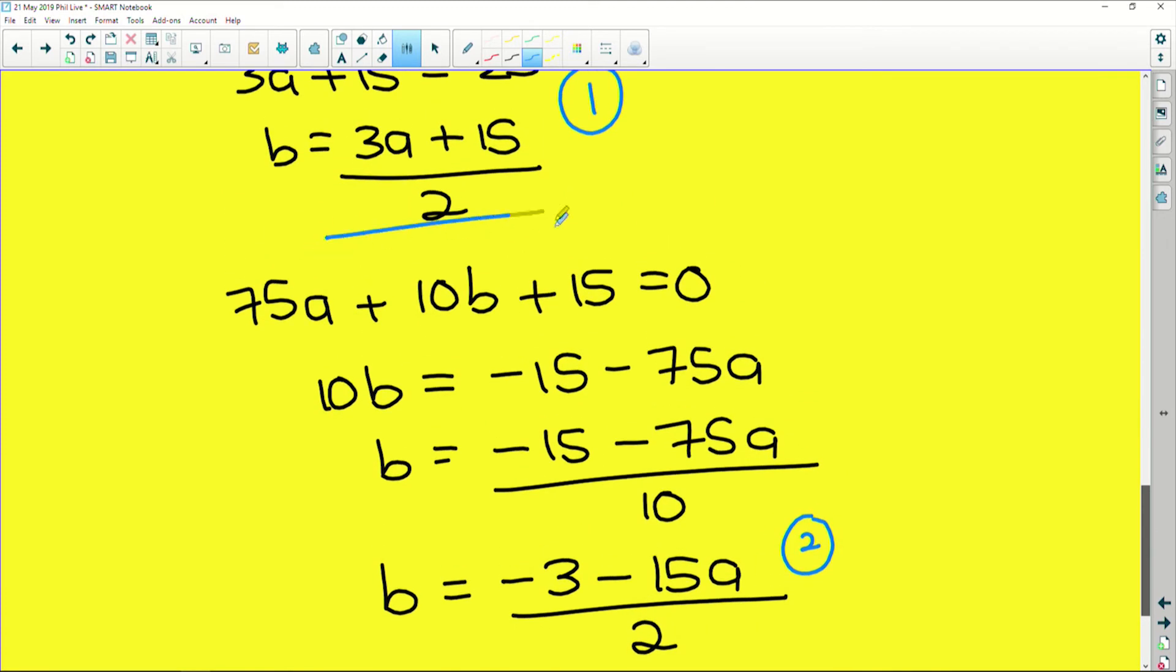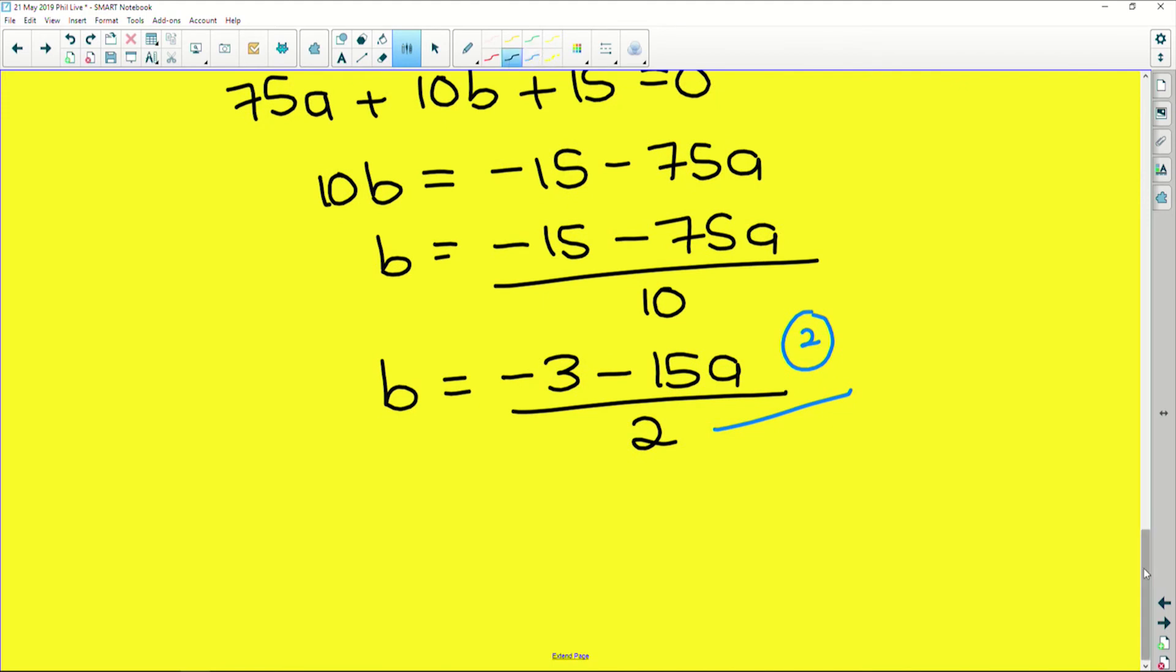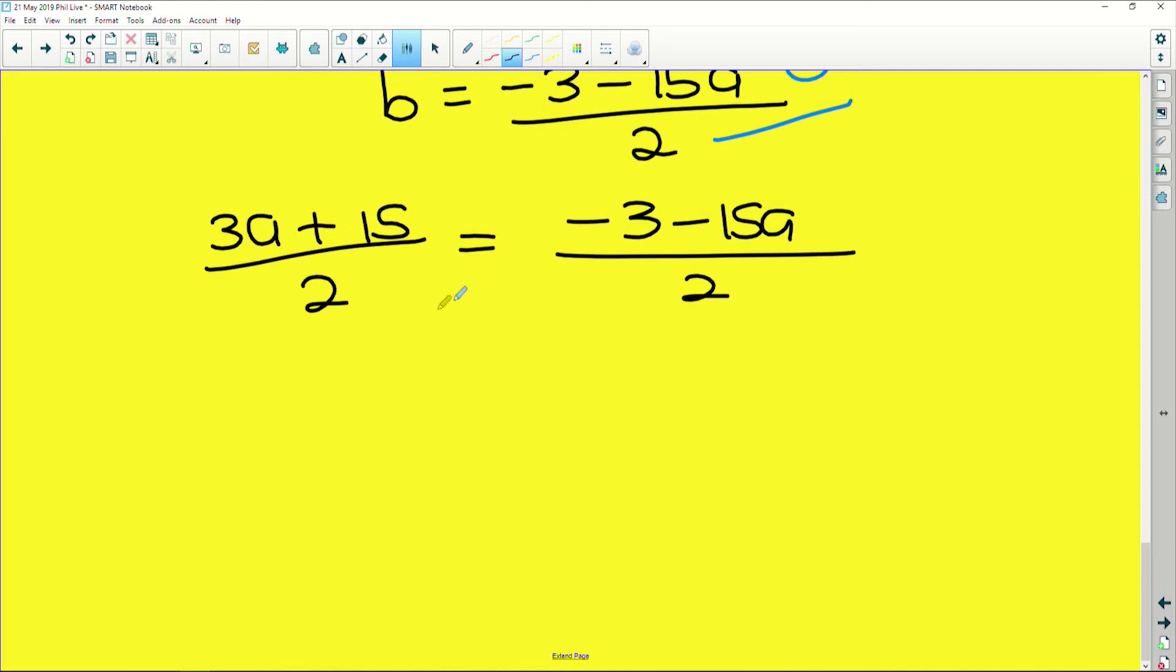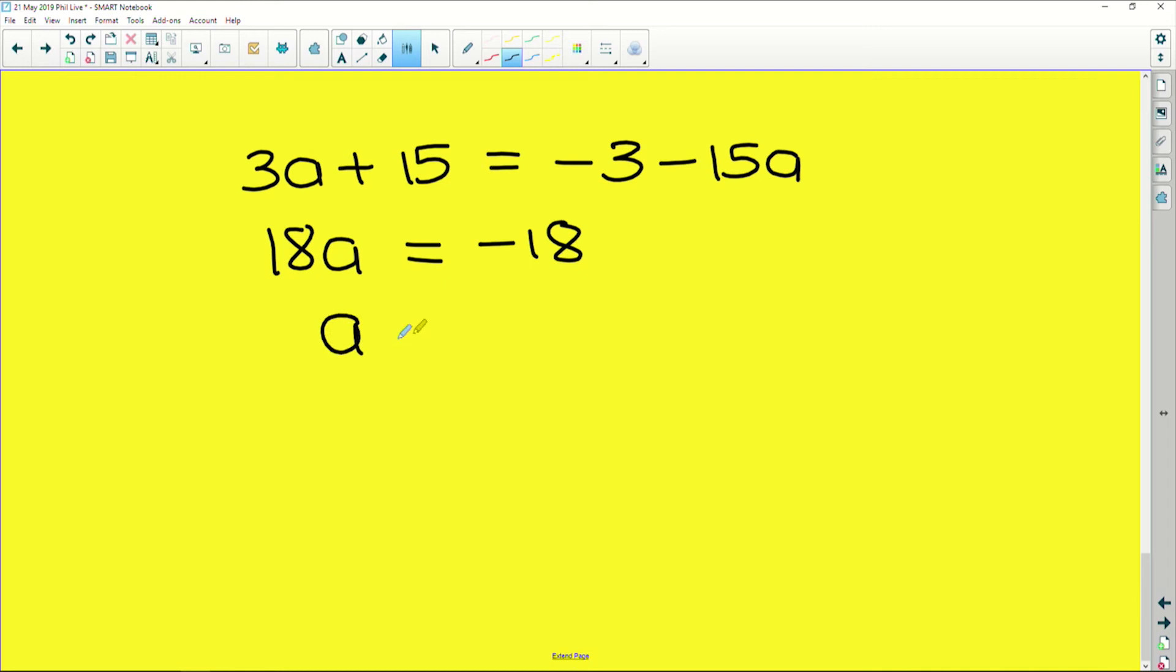So now we have one equation and another equation in terms of b. So we can simply equate them to each other. So we had (3a + 15)/2 is equal to (-3 - 15a) also all over 2. Okay, now we simply solve for them. So if we cross multiply or if we see that they're over the same denominator, so the numerators must be the same, we can say that 3a + 15a gives us 18a is equal to -3 minus 15. If we solve or try to isolate a, we say 3a + 15a gives us 18a is equal to -3 - 15, which is -18, which means that a easy peasy is -1.